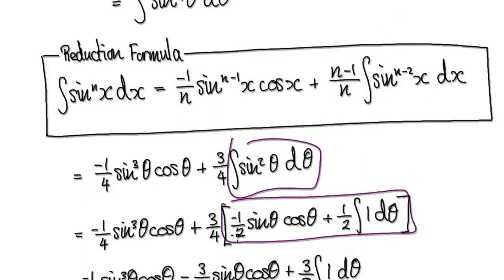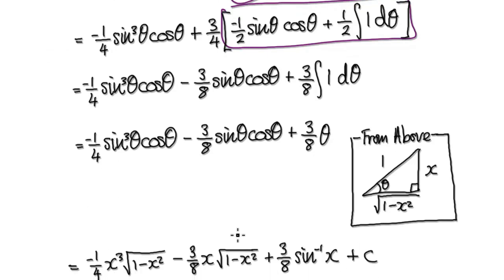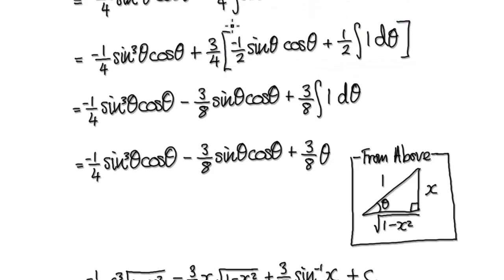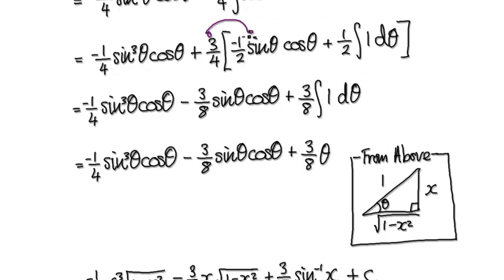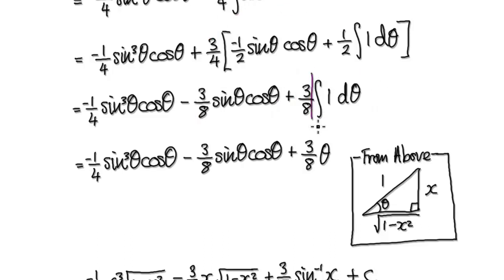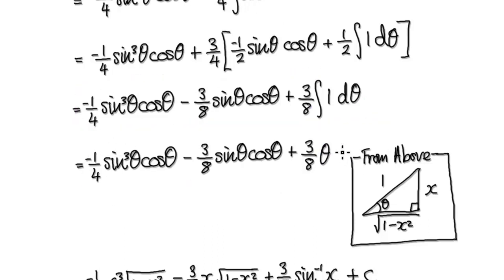Now it's just a matter of tidying this up. This times this gives us this term here, and this times this gives us this term here. When you integrate 1, it's just theta. So this expression becomes our result in terms of theta. We will sort out the constant C right at the end, so leave C for now. Our answer at this stage is this expression.